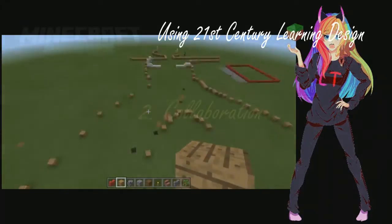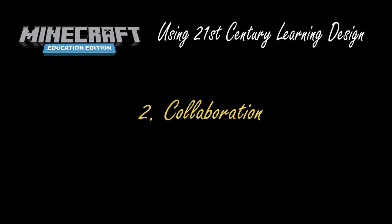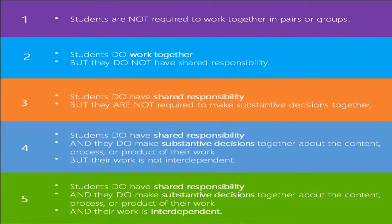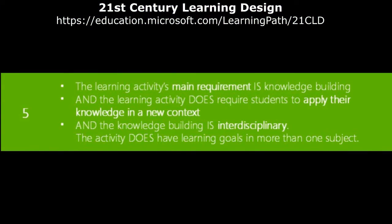Collaboration is key in this project. This is a good time to talk about collaboration — the kids have to do very high level collaboration here, so I'm going to put them at level five. Students do have shared responsibility and they make substantive decisions together about the content, process, or product of their work. Their work is interdependent — they've got to make sure this whole thing works together.